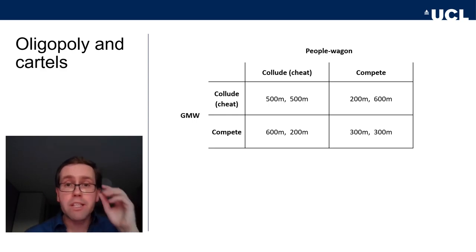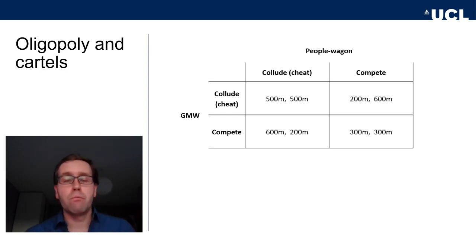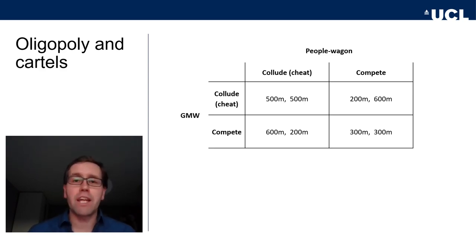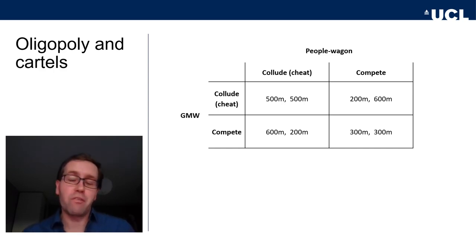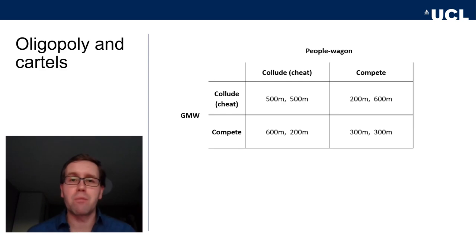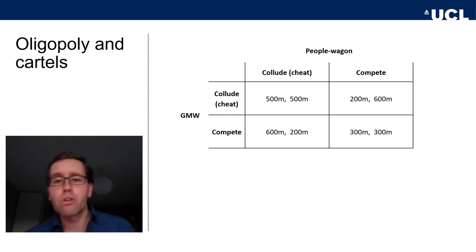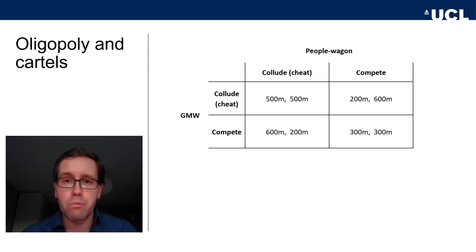But as we discussed with the prisoner's dilemma and the problem of cooperation, firms are really good at reaping the potential benefits of cooperation. Neither the leaders of GMW nor People's Wagon are stupid — they know that if they can agree on collusion, on not installing the clean engines, they can make a lot more money. If there's some mechanism to coordinate behavior and punish defectors, they can both end up in the highly profitable collude-collude equilibrium of 500 million each, where they get huge profits without investing in cleaner engines — and we all lose out.